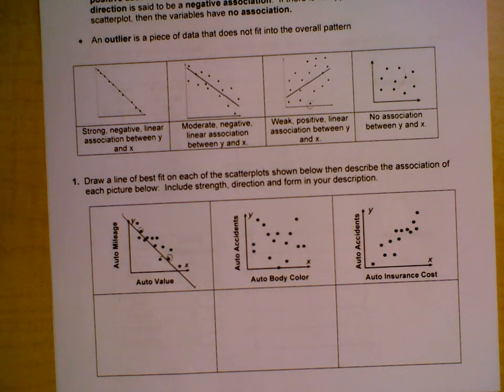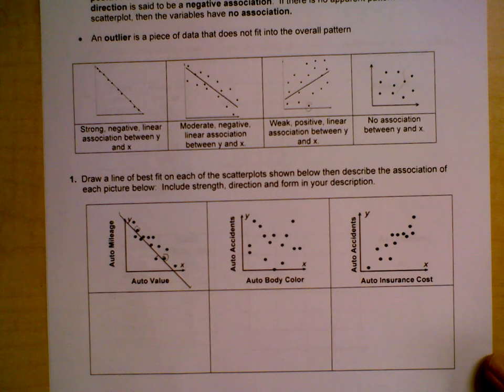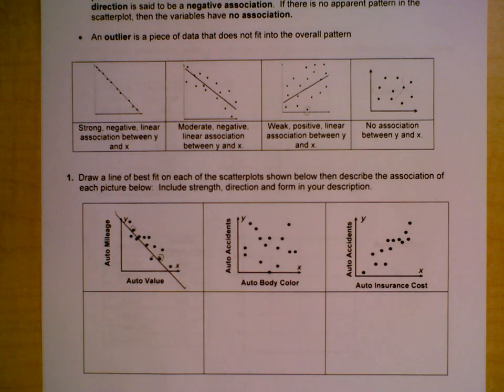So let's describe this scatter plot and the association. Do you think this is a strong, a moderate, or a weak strength? I'm going to say moderate.